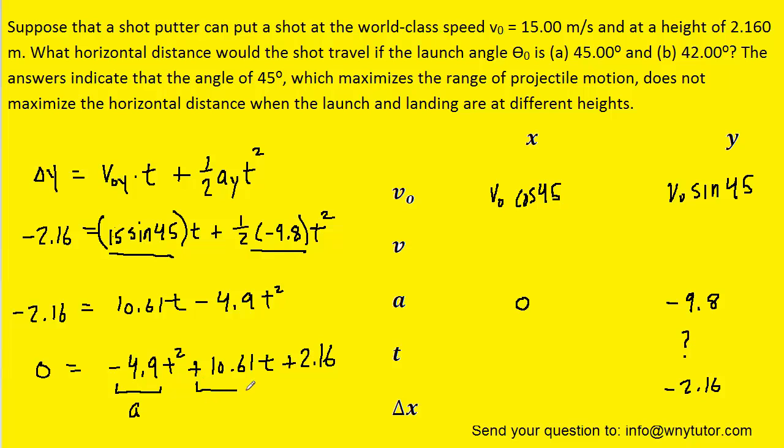Our a will be negative 4.9, b is positive 10.61, and c is positive 2.16. And when you solve for the time, you'll get two values. You can reject the negative value, and so the time of flight becomes 2.352 seconds.